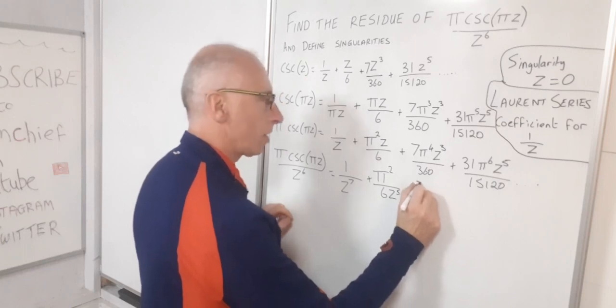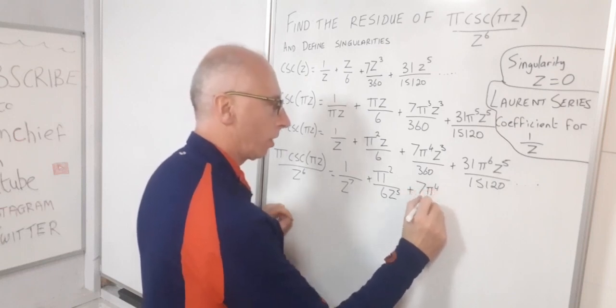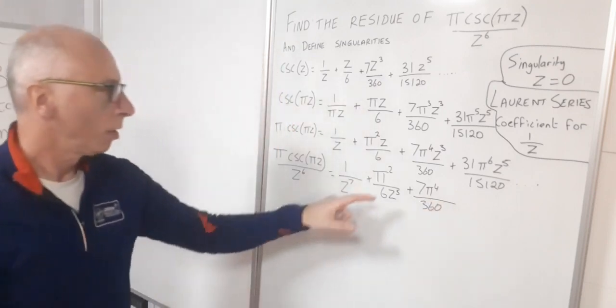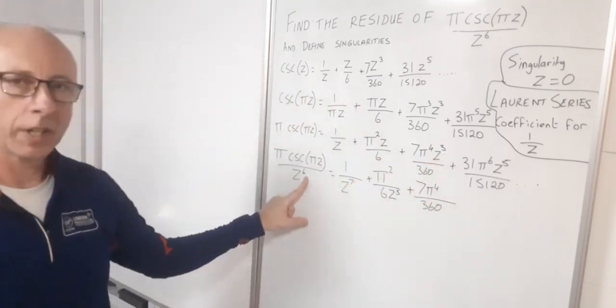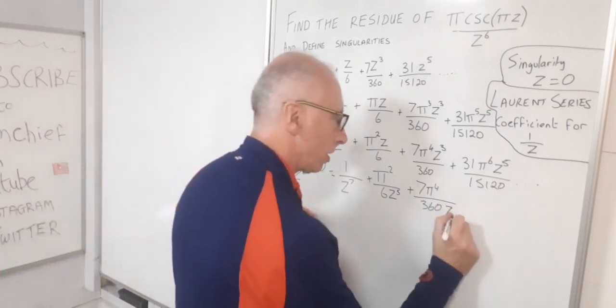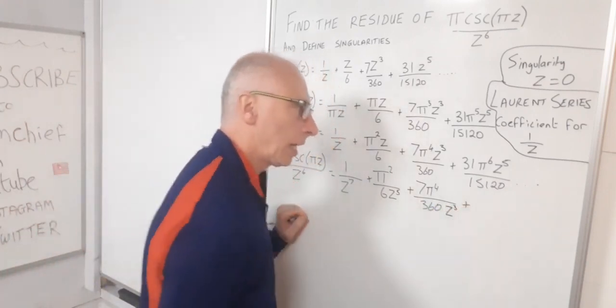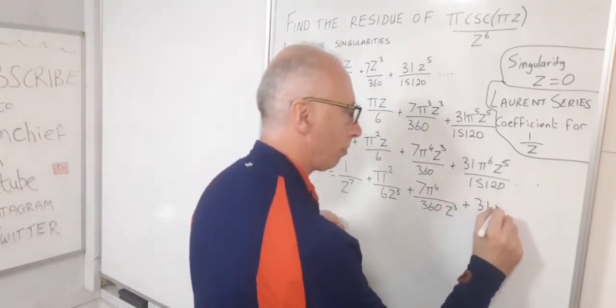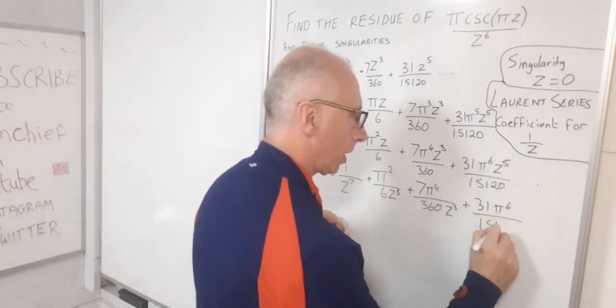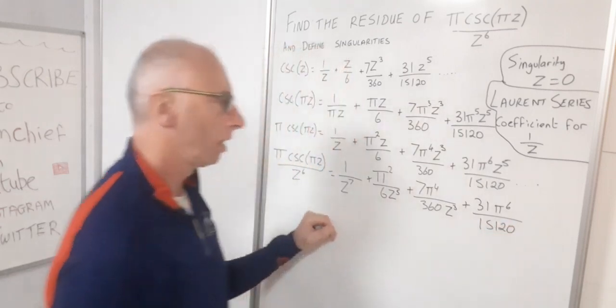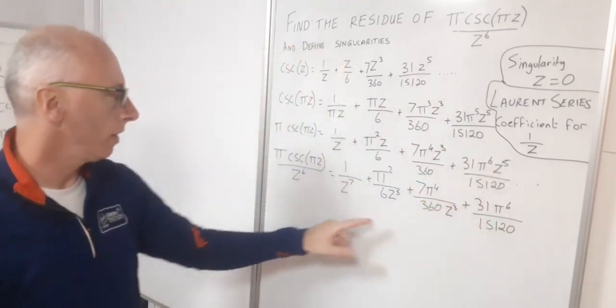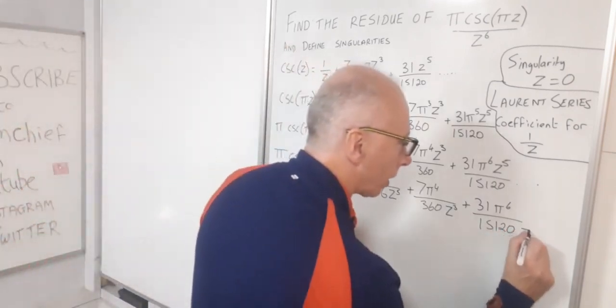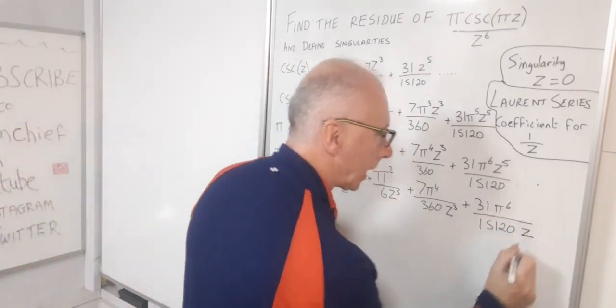So this one here 7π⁴/360 that will stay. But I've got z³ divided by z⁶. That's going to give me 1/z³. And same here, write the coefficient in. 31π⁶/15,120. And then z⁵ divided by z⁶ just gives me 1/z. And that's going to give me just what I need now.